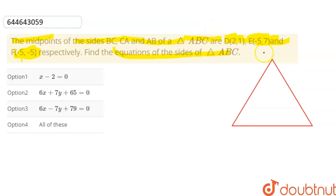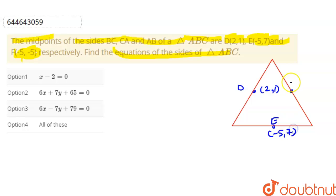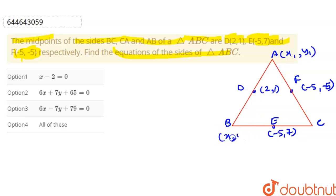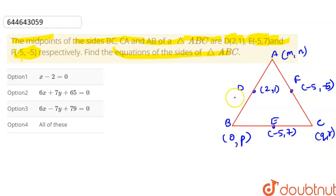So we have a triangle and the midpoint coordinates are: D = (2,1), E = (-5,7), and F = (-5,-5). We have to find the vertices first. Let's say the vertices are A, B, C. Suppose the coordinates of A are (m,n), for B it is (o,p), and for C it is (q,r).